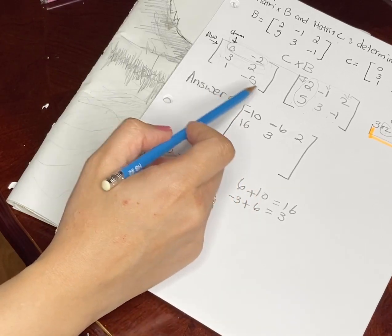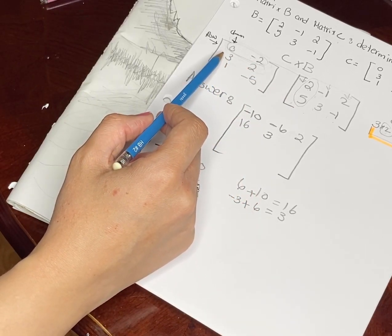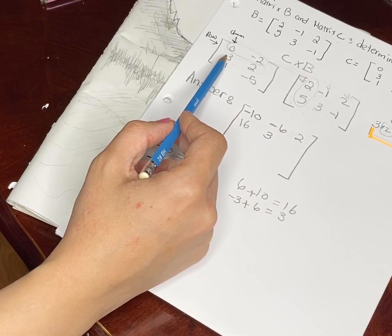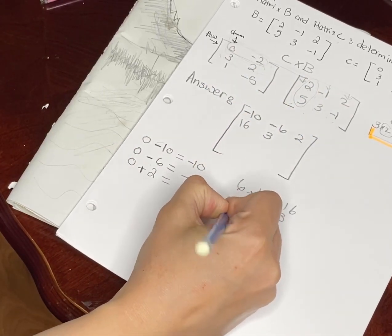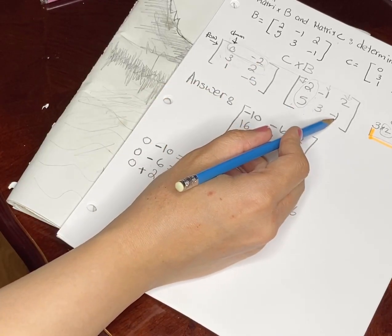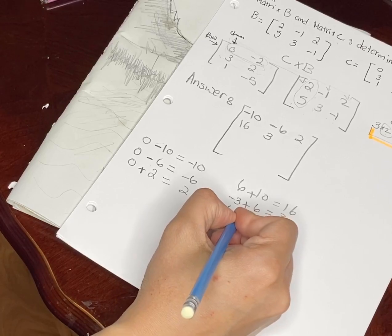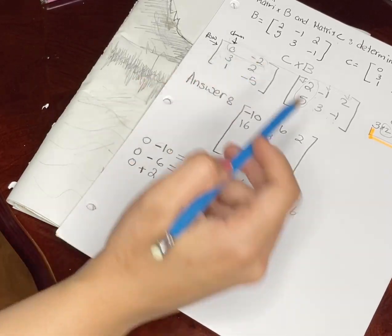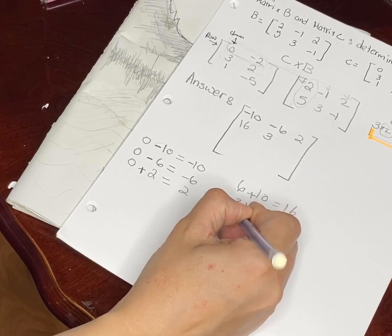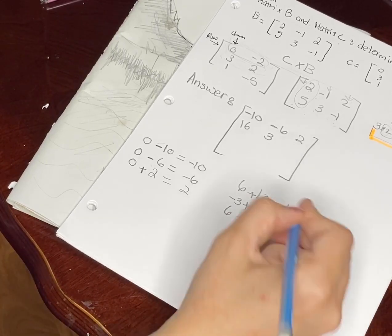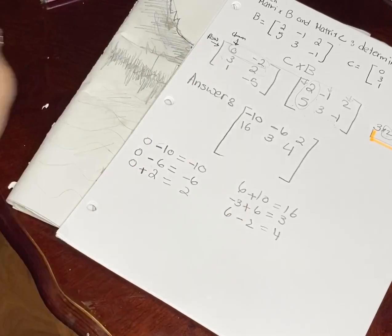Second row times third column: three times two is six, two times negative one is negative two — so six minus two is four. That entry is four.